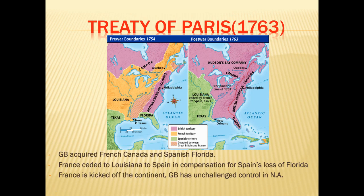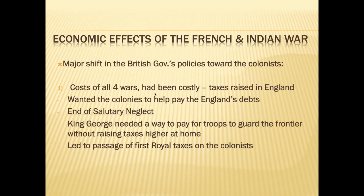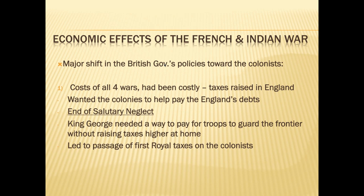American colonists rejoiced — the French were gone from their doorstep and they now had access to land in the Ohio River Valley. But then came a major shift in London's policies. The war was very expensive: 140 million pounds in debt after all four wars against France. Taxes were raised in England, and the English people asked why they were paying to defend the American colonies if the colonies weren't paying taxes. Understandably, King George III and Prime Minister George Grenville decided the colonies needed to help pay England's debts.